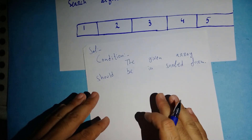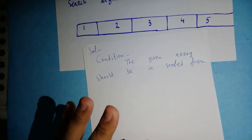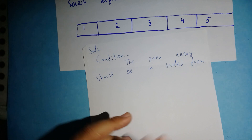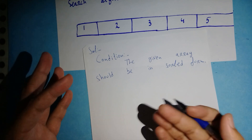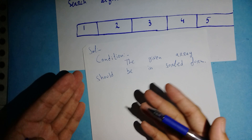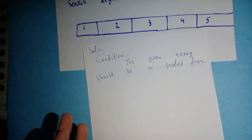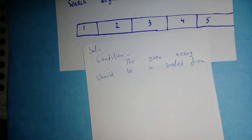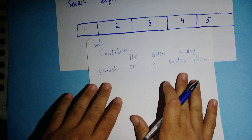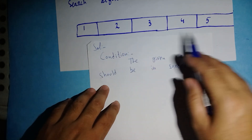So when applying interpolation search, the array should be sorted. If the array is not sorted, first you have to apply any sorting algorithm — like bubble sort or counting sort — on the given array to make it sorted. After that, you can easily apply interpolation search algorithm on the given array.